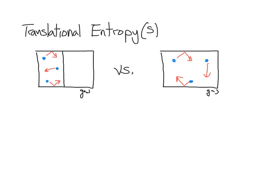Remember, our definition of entropy is a measure of how spread out or dispersed the system's energy is. The energy we're talking about is translational energy. In which case is that translational energy dispersed or spread out more? On the right-hand side, the larger container means that the translational motion is spread out over more space. Therefore, it is a higher dispersion of energy and a higher entropy. That means the right-hand side has a large entropy value, and the left-hand side has a small entropy value.